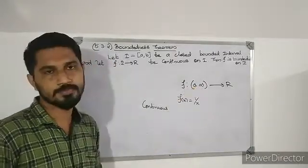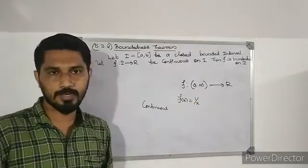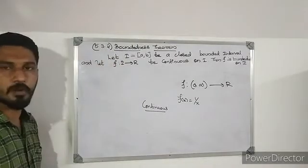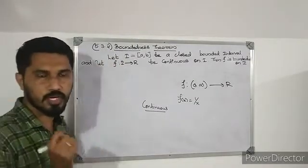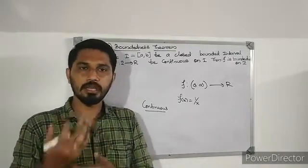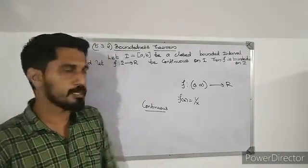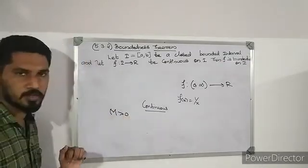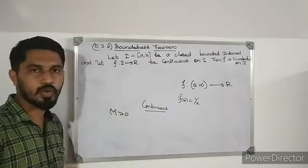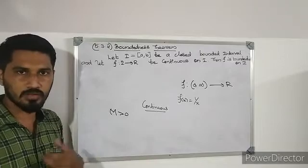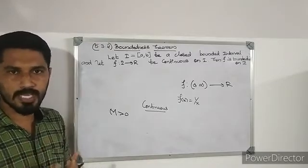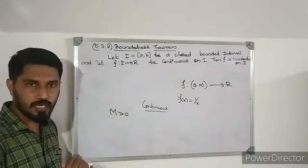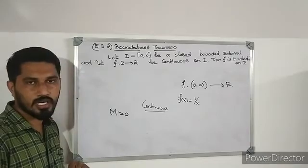This function is continuous on (0, ∞). But is this function bounded? The function values — as we will see — are not bounded. This gives us a counterexample: a continuous function on a non-closed interval that is not bounded. This illustrates why the boundedness theorem requires a closed and bounded interval.